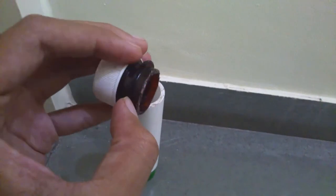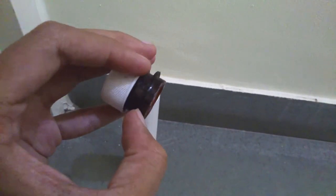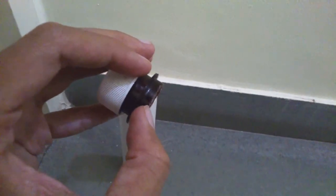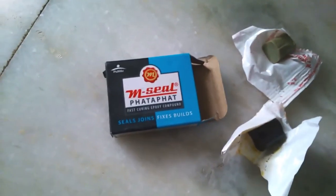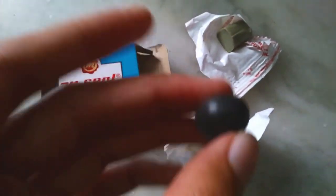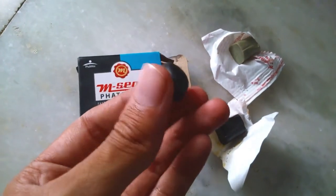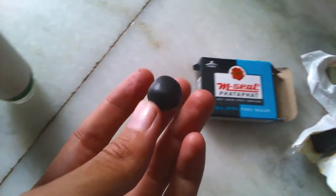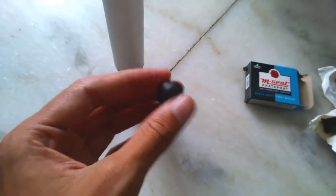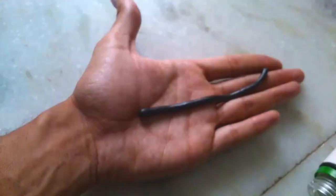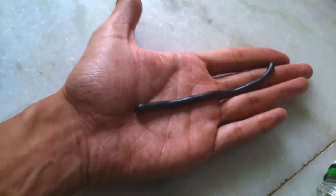Take two equal parts of M-Seal sealant and hardener of about 2 to 3 mm thick and form a ball like this. Then roll it in a long shape, something like I've done here.